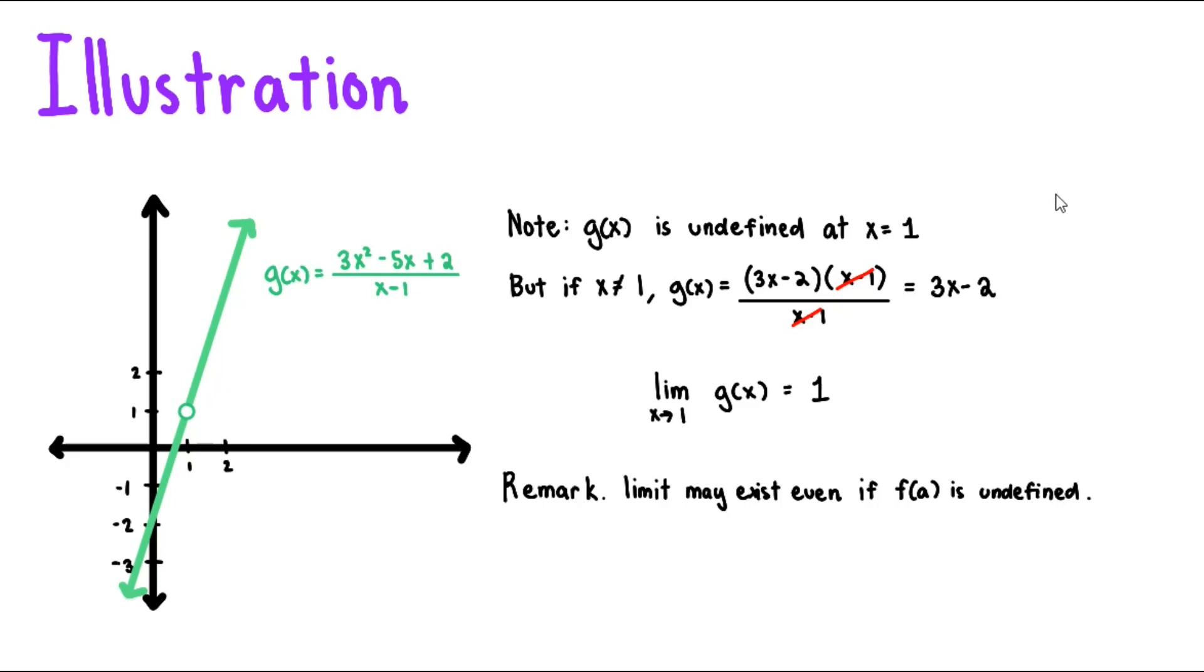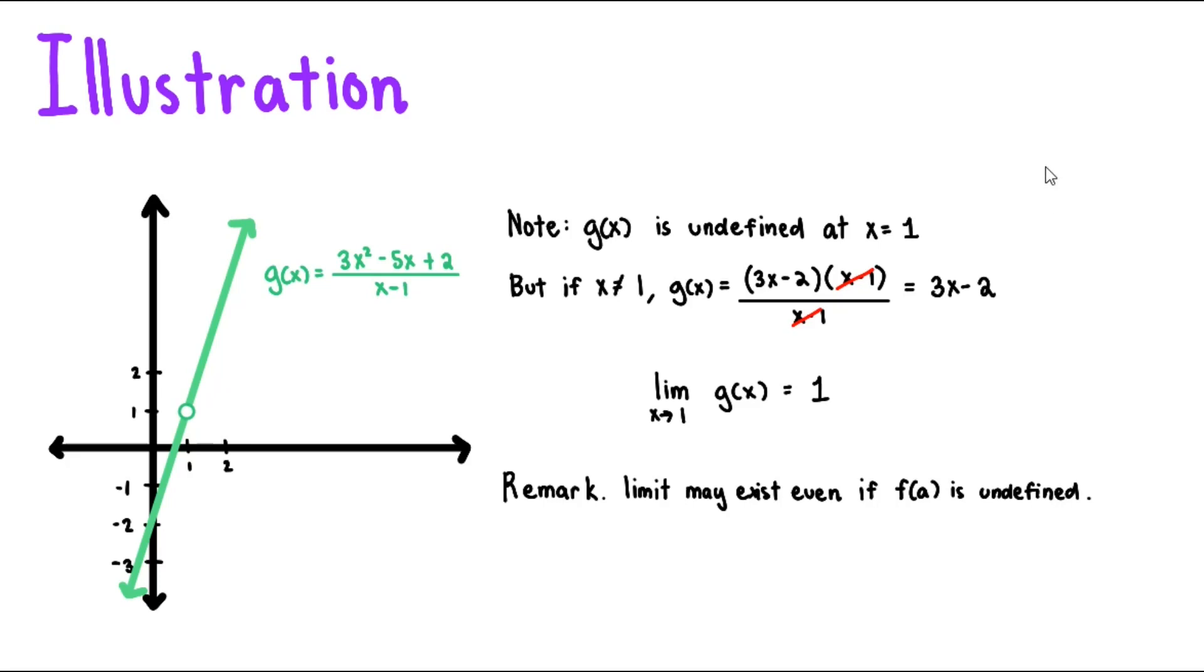Let's now have one final illustration. We consider h of x to be this piecewise function. And take note that at h of 1, at x equals 1, we have the value to be negative 2. Take note that h of 1 equals negative 2.